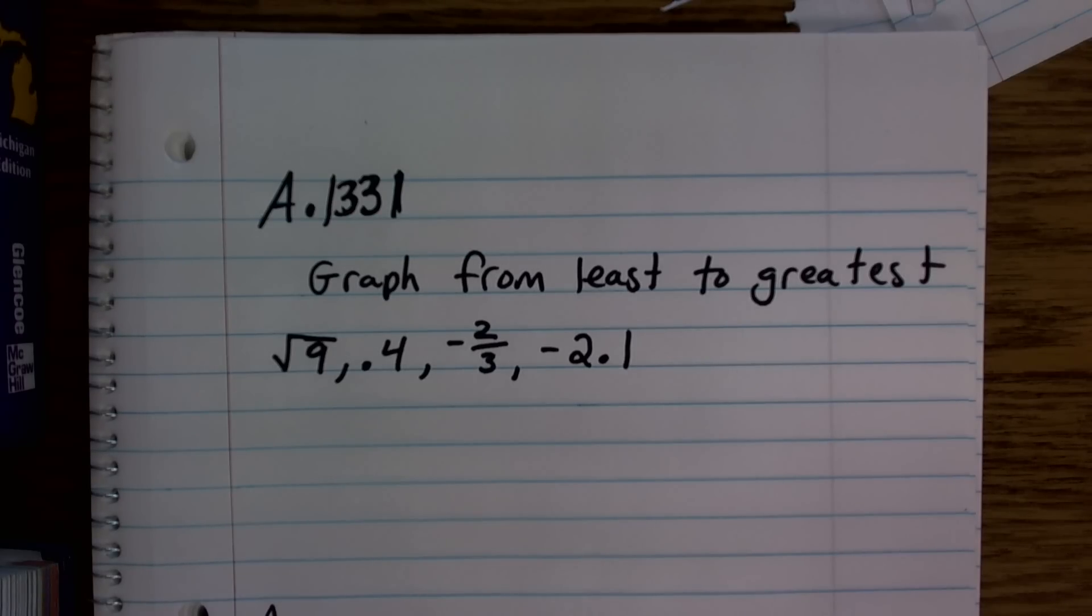OK, so for this problem it wants us to graph from least to greatest. So right now I have the square root of 9, 0.4, negative 2 thirds, and a negative 2.1.